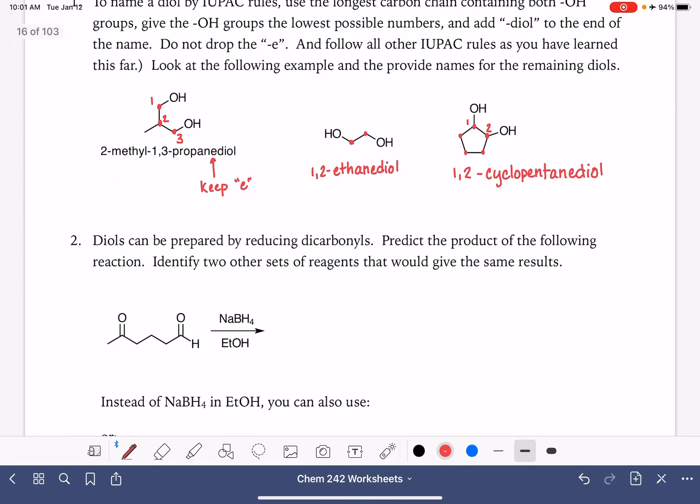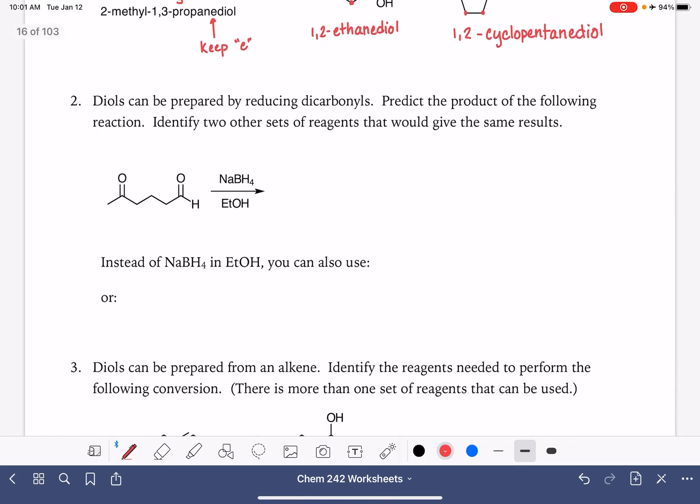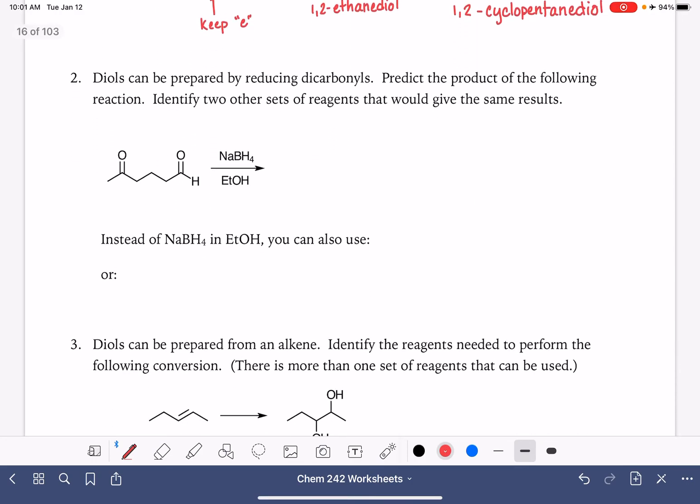There's a couple different ways that we can prepare a diol. One way is through the reduction of a molecule that has two carbon oxygen double bonds, a dicarbonyl. The carbon oxygen double bond is referred to as the carbonyl group. So this is similar to the reactions that we were looking at previously. Just by doing some sort of reduction reaction on the molecule with two carbon oxygen double bonds, we can end up with a diol.